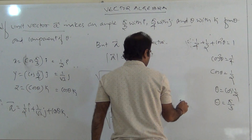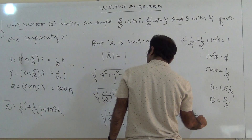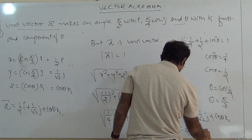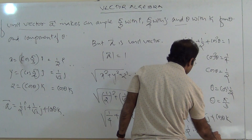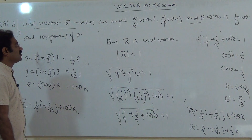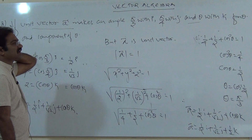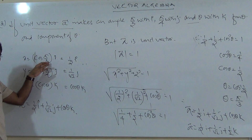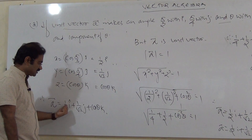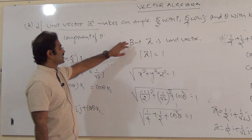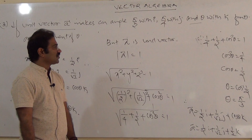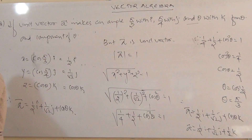The components of A are: 1/2 i, 1/√2 j, and cos(π/3)k = 1/2 k. Summary: unit vector A makes angles π/3 with i, π/4 with j, θ with k. We use x = cos(π/3), y = cos(π/4), z = cos θ, substitute into the unit magnitude condition to find θ, then write the components.